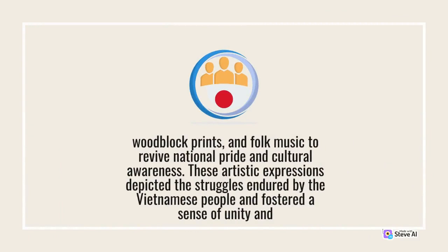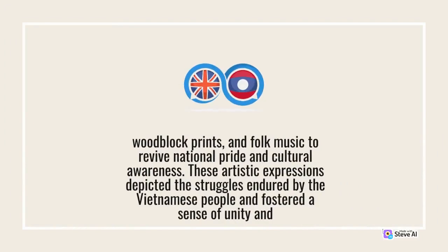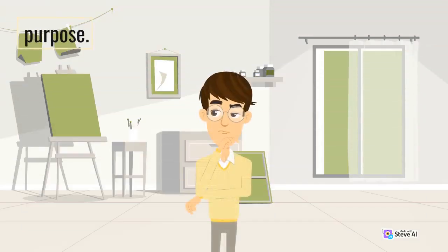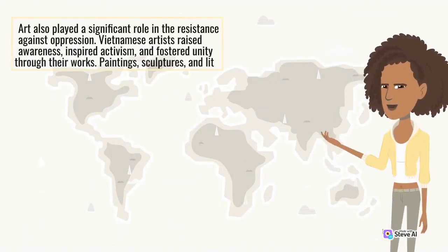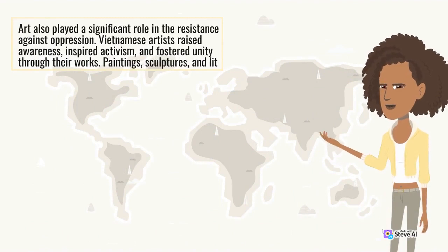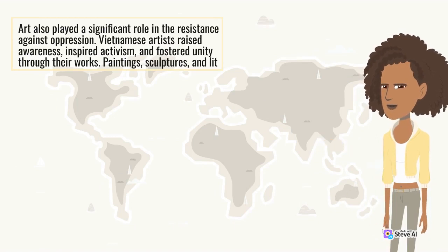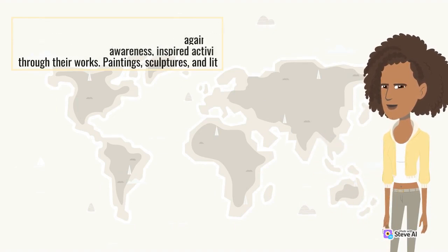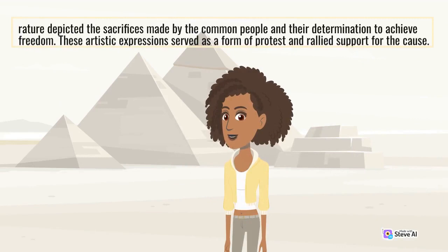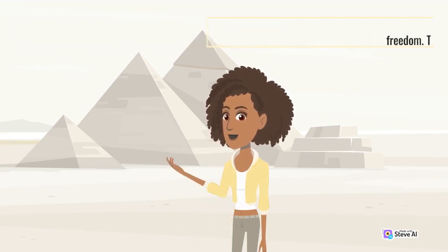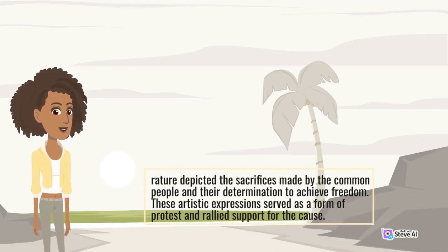These artistic expressions depicted the struggles endured by the Vietnamese people and fostered a sense of unity and purpose. Art also played a significant role in the resistance against oppression. Vietnamese artists raised awareness, inspired activism, and fostered unity through their works — paintings, sculptures, and literature depicted the sacrifices made by the common people and their determination to achieve freedom. These artistic expressions served as a form of protest and rallied support for the cause.